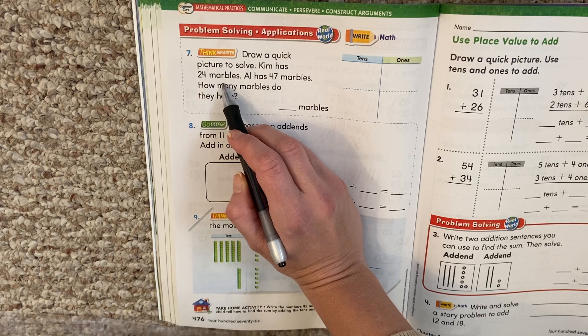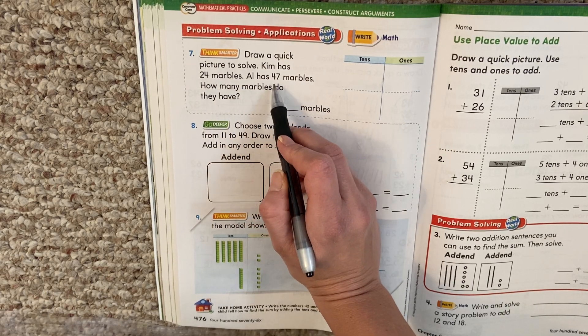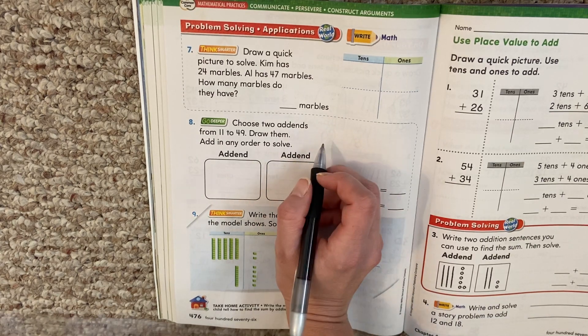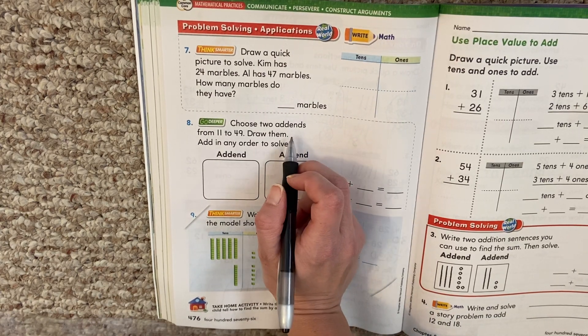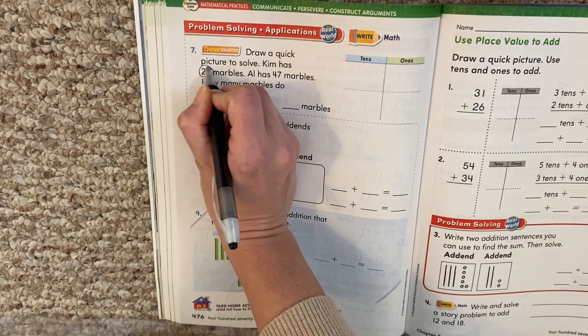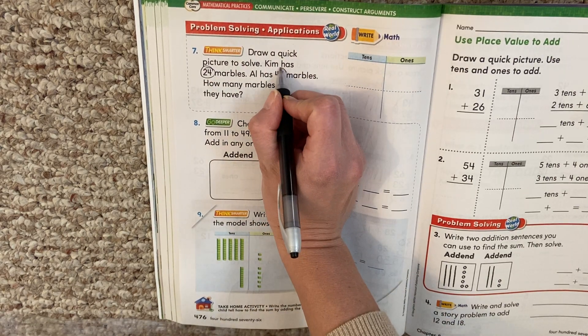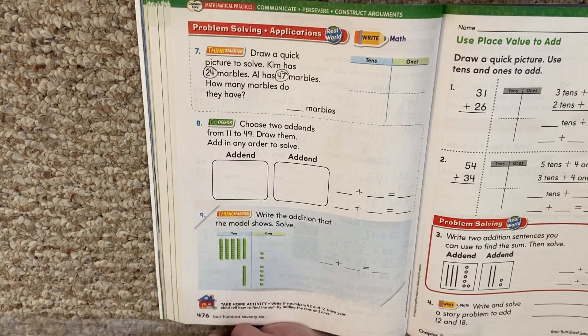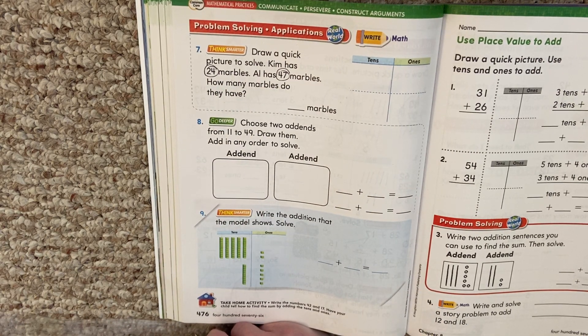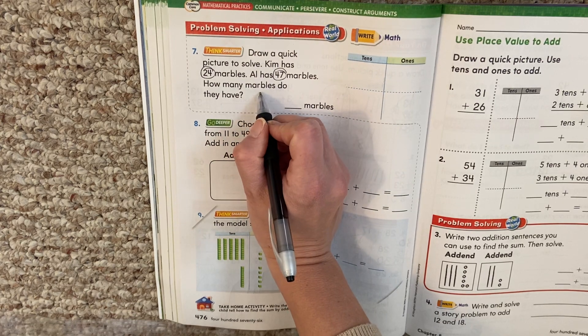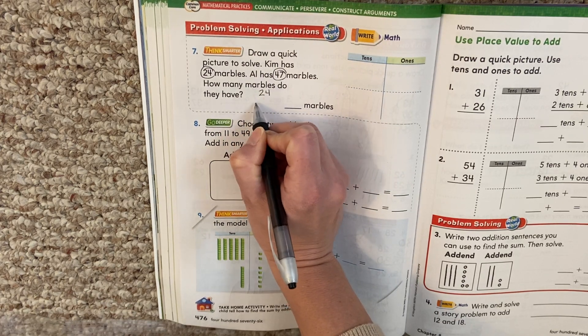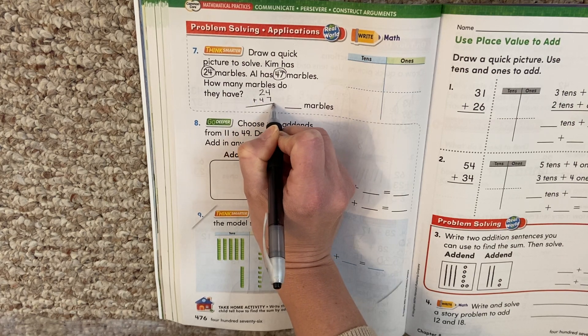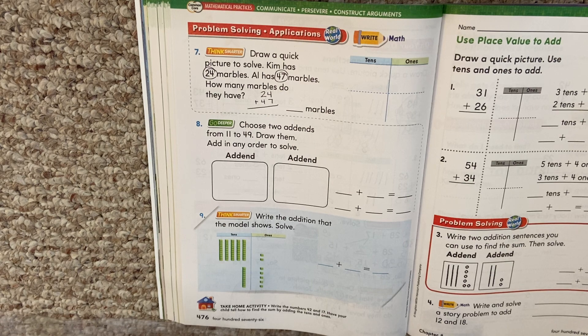Kim has 24 marbles. Al has 47 marbles. How many marbles do they have? So let's look at that again. Kim has 24 marbles. Al has 47 marbles. How many marbles do they have? Well, we want to know all together how many do they have. So we're going to make a plus problem. 24 plus 47. And I know they don't give you much room.